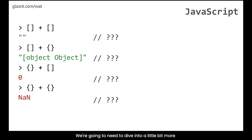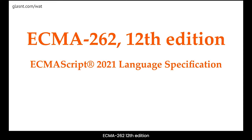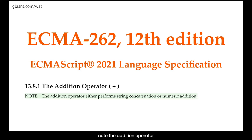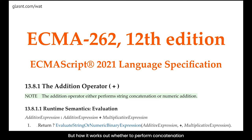Triple equals in JavaScript will not do any type coercion and so should be used when you're trying to compare equality across different objects. As for the array/object examples, we need to dive into more detail because the plus operator is more complicated. The ECMA-262 12th edition — the ECMAScript 2021 language specification — has section 13.8.1, the addition operator, which notes: the addition operator either performs string concatenation or numeric addition.